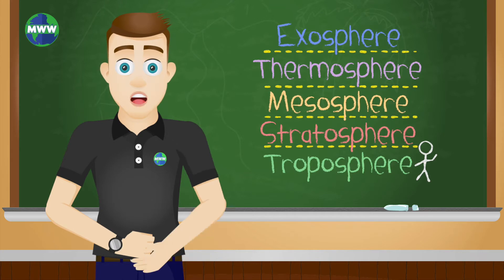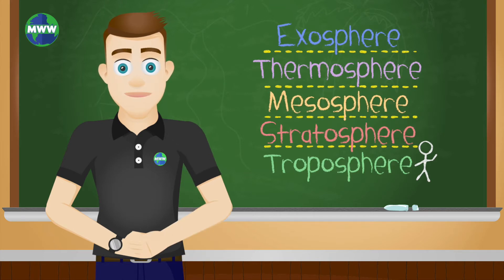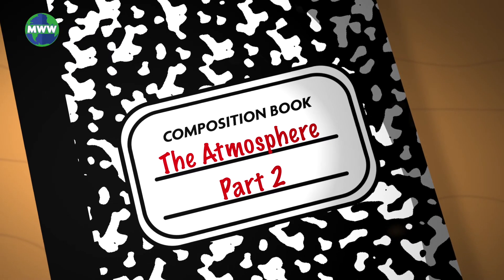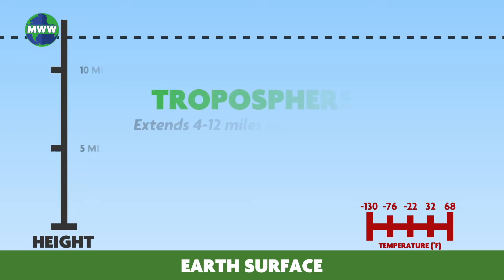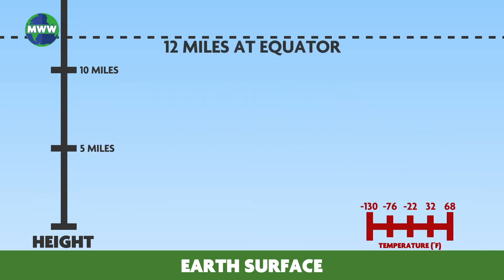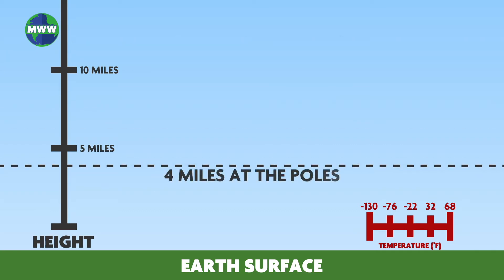The layer that we live in at the earth's surface is called the troposphere, part of the lower atmosphere. The troposphere extends 4 to 12 miles high and is where the majority of all weather occurs, which includes cloud formation. The height of the troposphere varies based on location — at the equator it's at its highest and it's at its lowest at the poles.